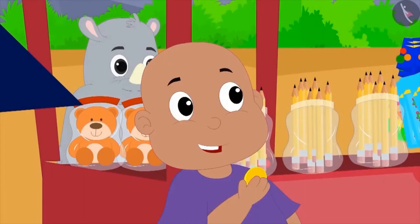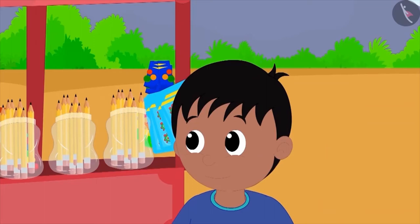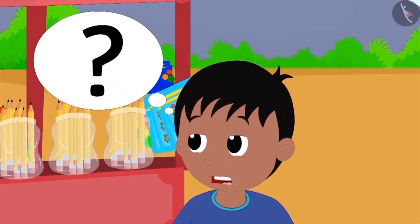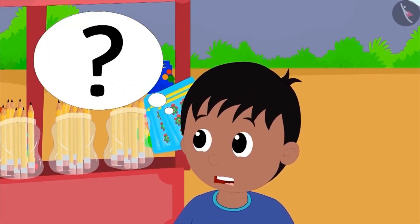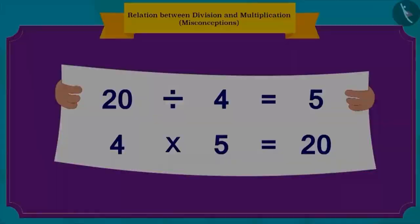Bablu quickly handed five rupees to Gagu and bought the pencil. Raju was amazed at how fast Bablu had calculated the answer. Then Bablu wrote these division and multiplication equations for Raju. He told Raju that he found the answer for division by using multiplication.